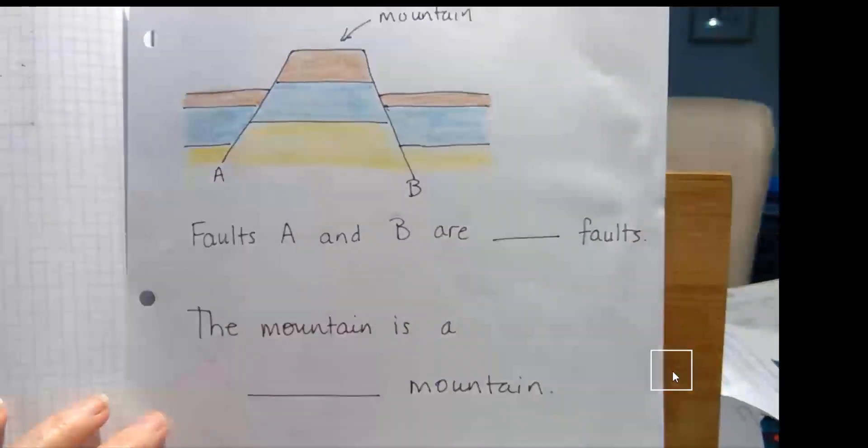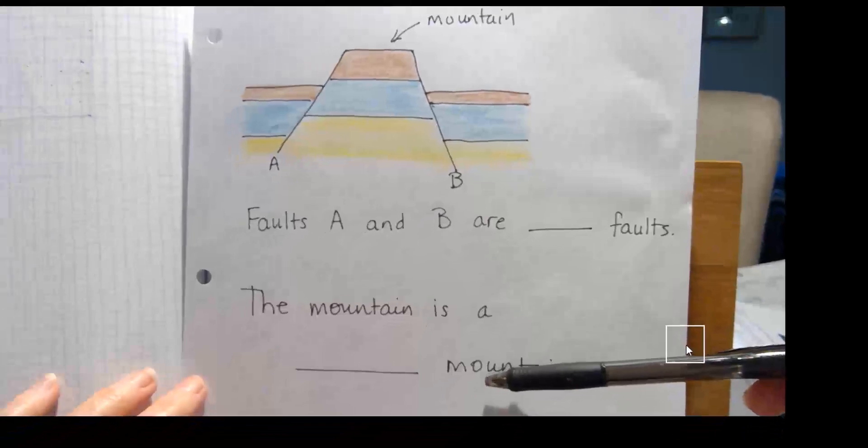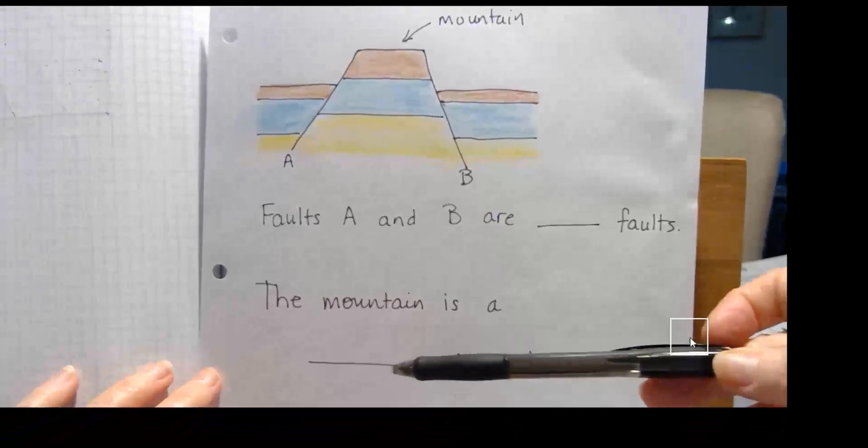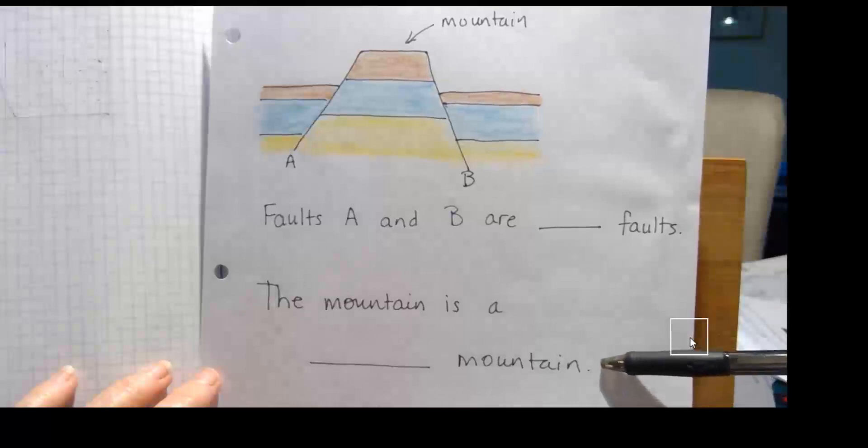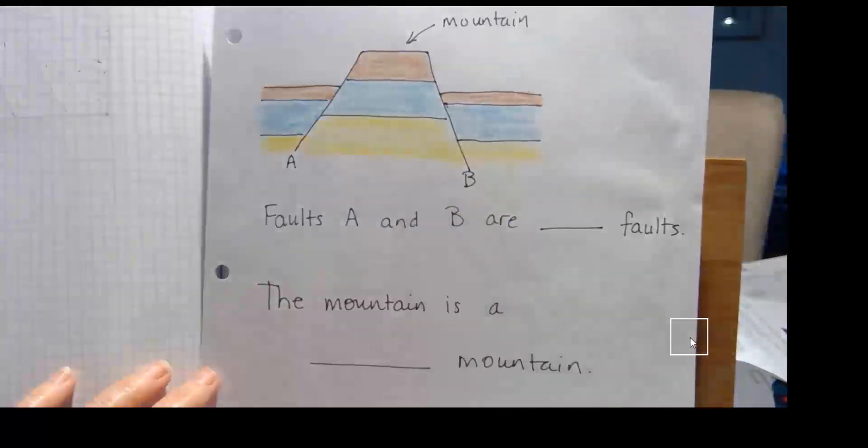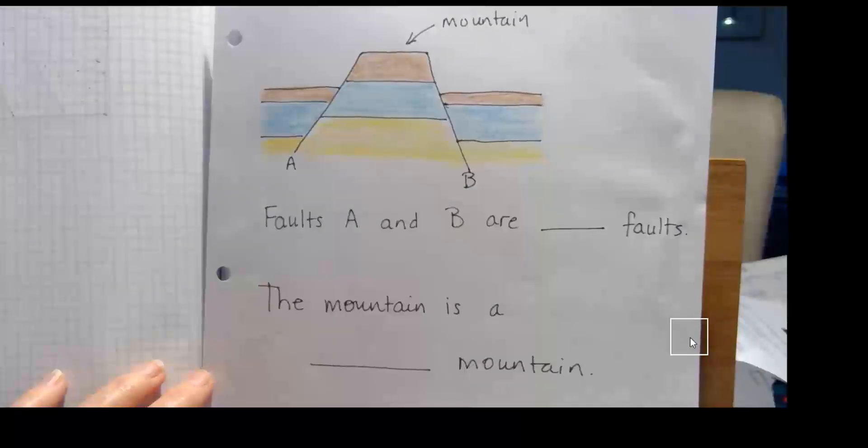Certain kinds of mountains, we said, are bounded by normal faults. Those are the fault block mountains. So, this mountain is a fault block mountain. Where would you expect those fault block mountains to form? Where normal faults would form? Normal faults form due to tension in the crust. We'd expect there to be a lot of tension in the crust along a divergent plate boundary.